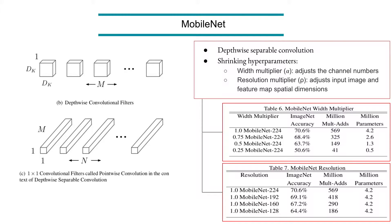This is how depth-wise convolution looks: the 1×1 convolution is the combining step. The filtering step splits into different channels and applies convolution per channel, and the combining step constructs another three-dimensional tensor.